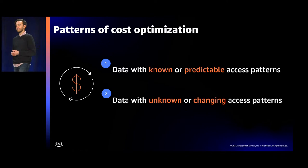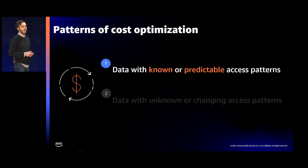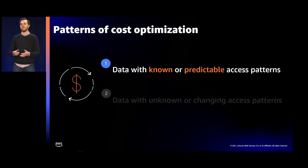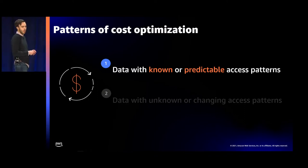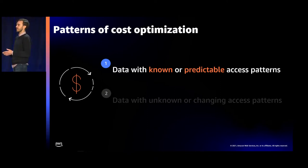In the same ways that customers have evolved their storage use cases over time, we've seen that customers have evolved in how they optimize cost — we call these patterns of cost optimization. Today we see two broad patterns. The first is data with known or predictable access patterns. Do you have data that becomes infrequently accessed after a definitive period of time? Take, for example, user-generated content like videos and photos shared with friends and family — that content is frequently accessed right after upload but becomes rarely accessed after a few weeks. For use cases like these, many customers can pinpoint the right moment to move data to a lower-cost storage class.